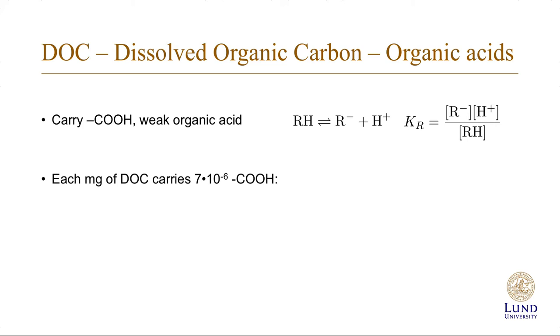So what is the link between the DOC and the organic acid? Empirically, we know that each milligram of DOC carries 7 times 10 to the minus 6 carboxyl groups. So that means that the sum of RH and R minus, that is the acid and the anion, is 7 times 10 to the minus 6 times the DOC value that you get from the lab.